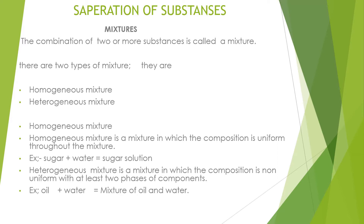Children, this week you have learned about the lesson separation of substances. Let's have a look at this lesson. The combination of two or more substances is called a mixture. There are two types of mixture: homogeneous mixture and heterogeneous mixture. A homogeneous mixture is a mixture in which the composition is uniform throughout the mixture. Example: sugar plus water — sugar solution.